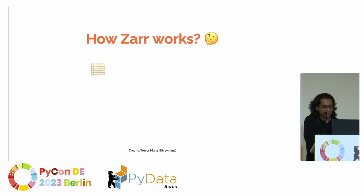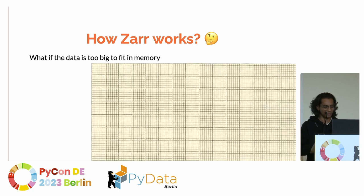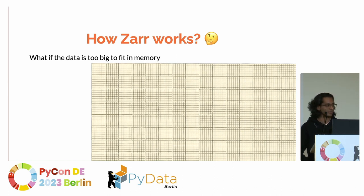Let's say you have a small dataset — 1 GB. You can easily load it into a laptop and work with it because you have enough memory. But what if your data is too big to fit in memory — say, 100 GBs? You can't just load it and work with it. You need a data format that can work out of memory. That's where ZAR kicks in.